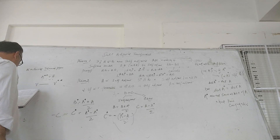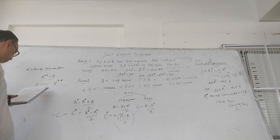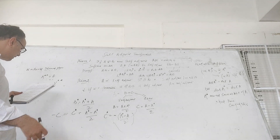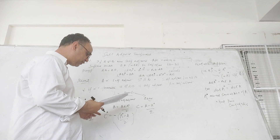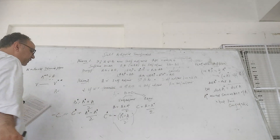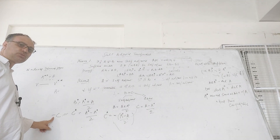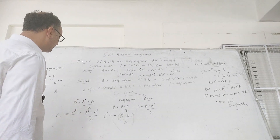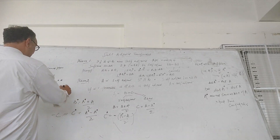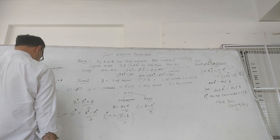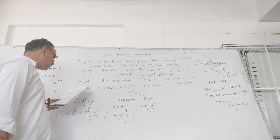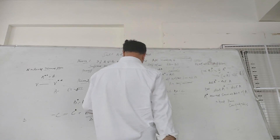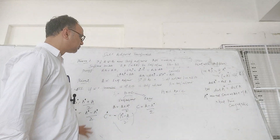We can multiply Hermitian matrices by iota to get skew-Hermitian: since iota squared equals minus one, multiplying by iota converts between them. So in the complex case, a linear transformation A can be written as A equals B plus iota C, where the iota comes from the minus sign but can be absorbed as part of the condition.